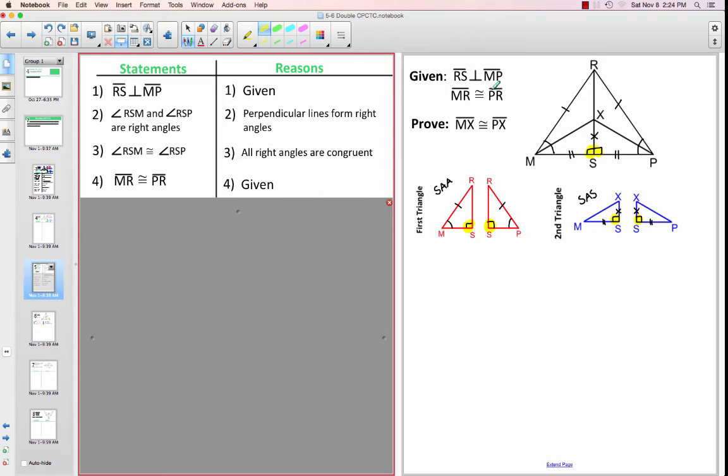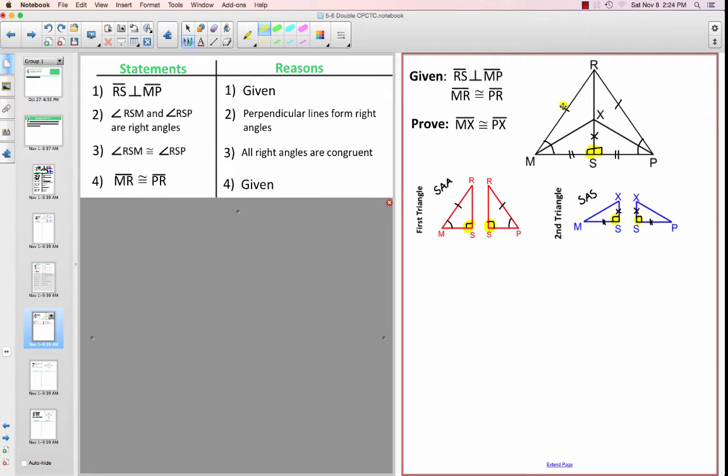We have MR is congruent to PR, and that's just a given, so we don't need any more of an explanation for that.